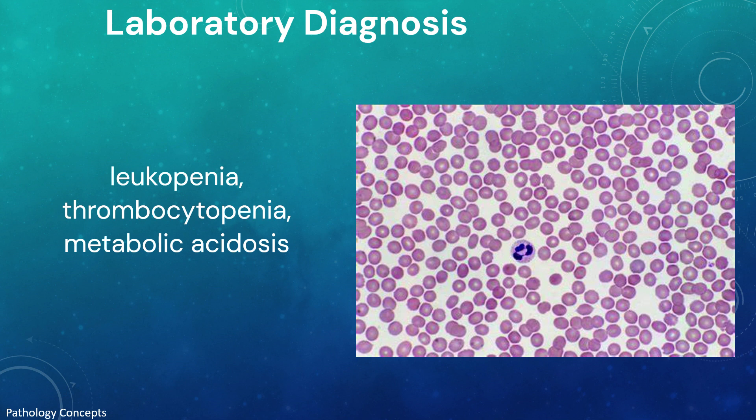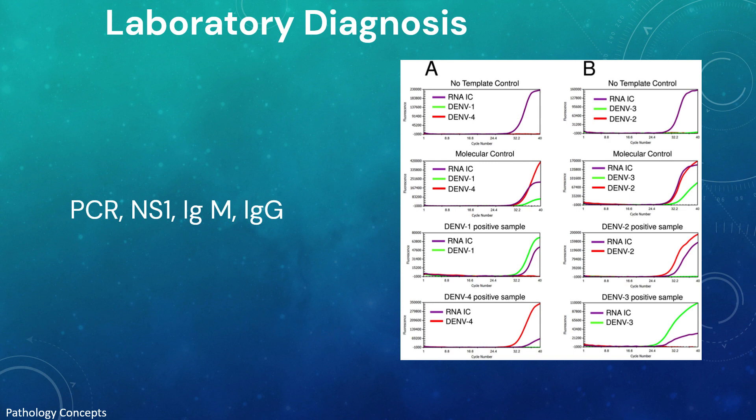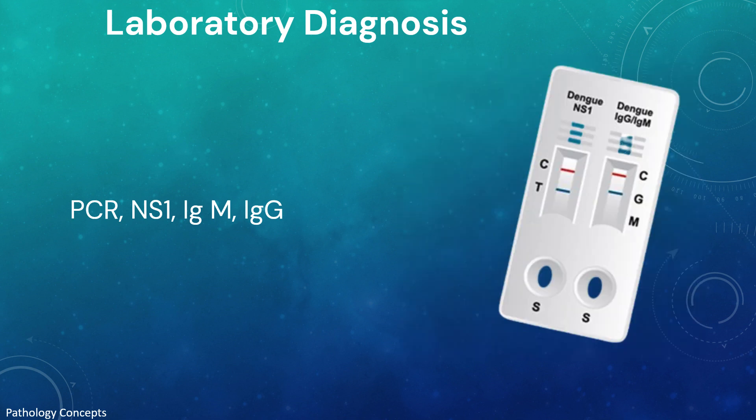Now let's learn about the laboratory diagnosis of dengue. Leukopenia, thrombocytopenia, and metabolic acidosis are the initial changes on laboratory examination. Virus isolation in cell culture, nucleic acid demonstration by PCR, and serological detection of viral antigens such as NS1 or specific antibodies are the preferred assays that help in the diagnosis of dengue infection.